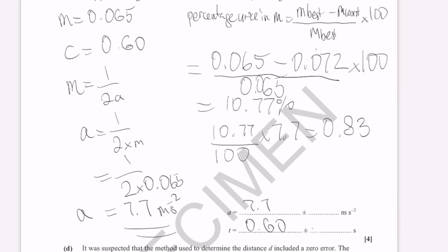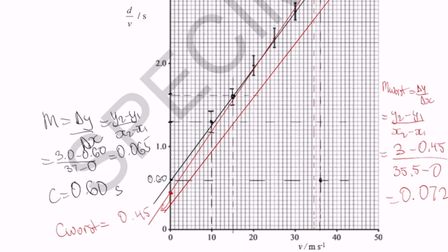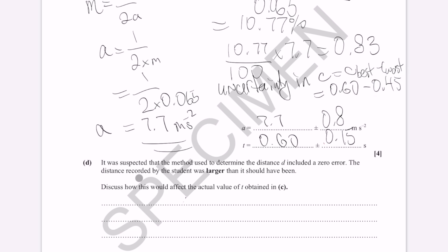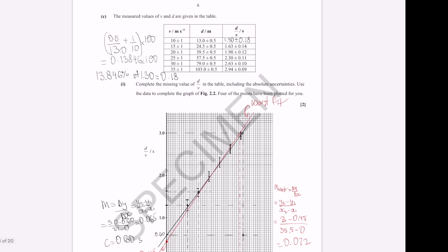So, let's just say 7.7 plus or minus 0.8 meters per second. To work out the uncertainty in the intercept is going to be a little bit easier because our formula for the uncertainty in the intercept, we don't even need to do the percentage uncertainty. We can just say that the uncertainty in the intercept C is just equal to C best, take away C worst. And our C best was 0.60. And our C worst is 0.45.